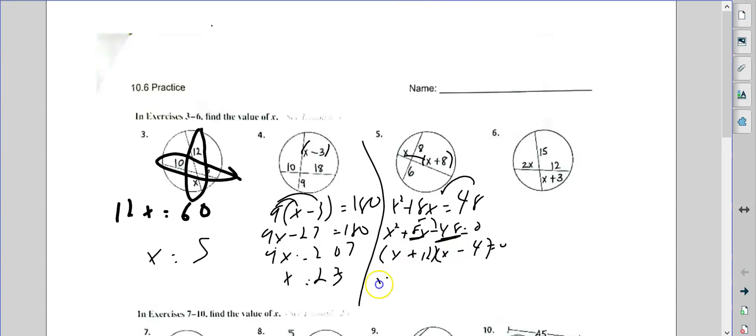But then when I solve that, x is negative 12 and x is 4. Now, you can have x's that are negative numbers. That's not a big deal. But if I plug in x here, I cannot have a measurement of negative 12. So this is not an appropriate answer. So x is only 4.